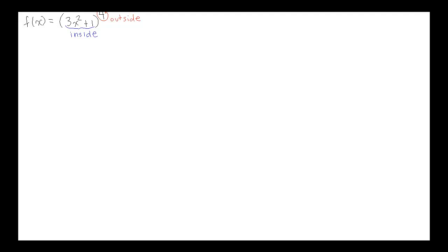You can think of this as an extension of the power rule. We take the outside function — the power on the outside — bring it down in front, subtract one, and so on. So f'(x) is going to be: we work on the outside first. The outside part is the power rule part. So 4 times (3x² + 1) to the... Notice I left the inside alone because I haven't finished what's going on on the outside. I haven't finished the derivative of the outside part — I don't want to touch the inside until I finish with the outside. So now to the third power.